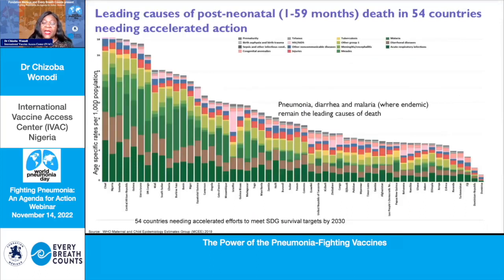As shown in a recent analysis by the Child Health Task Force, we see the causes of child mortality across 50-something countries that are not making as much progress in child health. Looking at the bar graphs, pneumonia — which is acute respiratory infections, colored in green at the bottom — represents a larger share of deaths of children, followed by diarrhea and malaria. So even though we have interventions against pneumonia, it continues to remain an important cause of death in children.